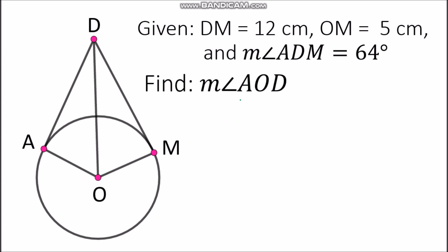For another example with the same given values, we now look for angle AOD. Since DA and DM are tangents to the circle, the tangents are perpendicular to the radii — segment AO and segment MO. Therefore, they are perpendicular, which means angle DAO measures 90 degrees.